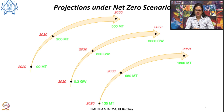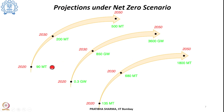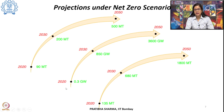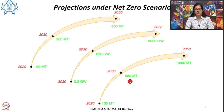To meet net zero hydrogen targets, electrolyzer capacity must grow from the current 0.3 gigawatts installed to 850 gigawatts by 2030 and 3,600 gigawatts by 2050. Simultaneously, CO₂ capture via CCUS at fossil fuel production plants must scale from the current 135 million tons of CO₂ abated per year to 680 million tons by 2030, and to 1.8 gigatons (1,800 million tons) per year by 2050.